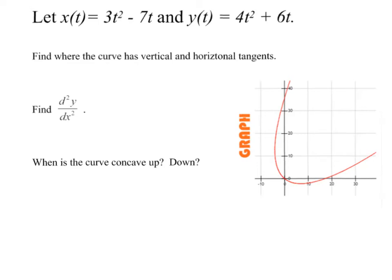In this video, we're going to talk about analyzing a graph using the derivative and the second derivative, which is something we haven't talked about yet. To begin with, I'm asking for where the curve has vertical and horizontal tangents. We do dy/dt over dx/dt, and that gives us dy/dx. The derivative of y with respect to t is 8t plus 6, and the derivative of x with respect to t is 6t minus 7.